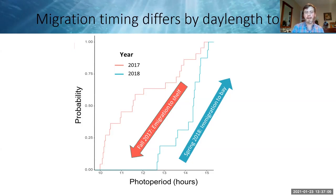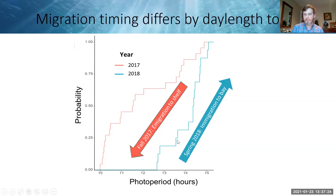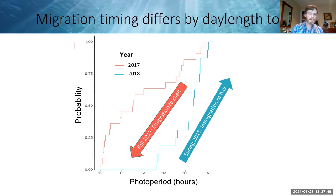Photoperiod — daylight hours — also differed between seasons. In spring, horseshoe crabs migrated back into the bay within a narrow window of 12.5 to 14.5 hours of daylight. In fall, migration to the continental shelf occurred across a broader range of day lengths — roughly twice as wide as the spring window. The spring migration was more tightly constrained in both temperature and day length compared to fall.